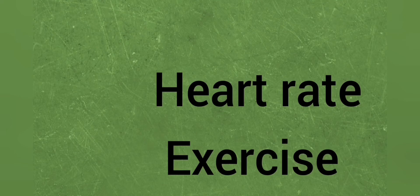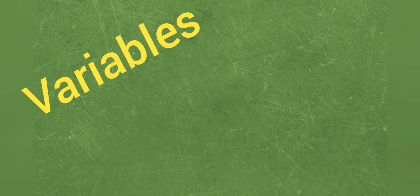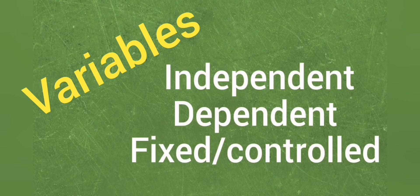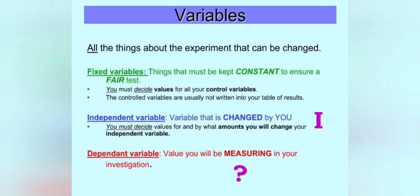So when we think about heart rate and exercise as our two keywords, as I mentioned previously, these two keywords also happen to be our variables. Now variables are things that can change the outcome of an experiment and we find three types of variables. We find the independent variable, the dependent variable, and then the fixed or controlled variable. So variables as mentioned before are all the things about the experiment that can be changed.